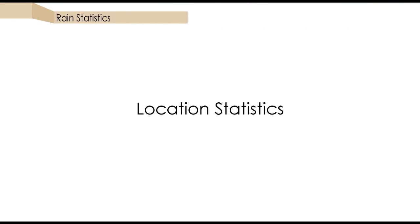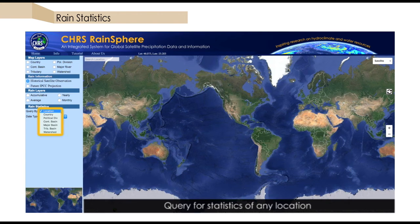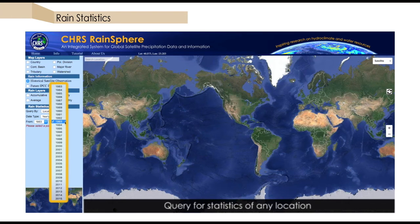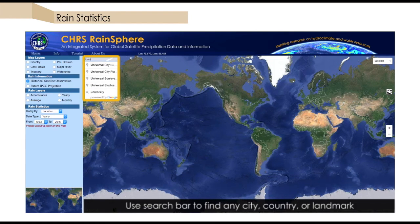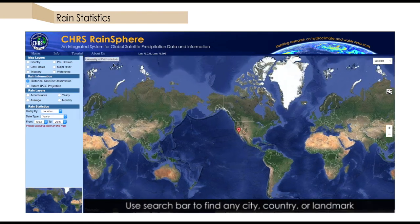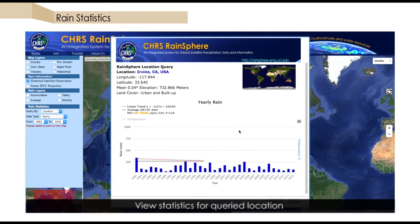Now let's quickly look at a location query. We will select the yearly rainfall for the entire available data period. Begin typing a location in the search bar and locations matching your search will begin to populate the list below. Click on the correct match to drop a pin on the map. Clicking on the pin will then bring up the statistical report for your location.